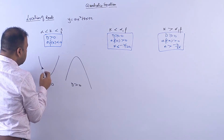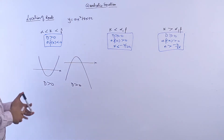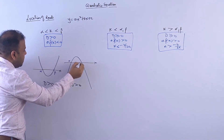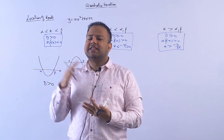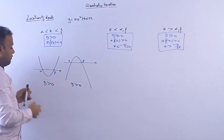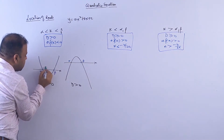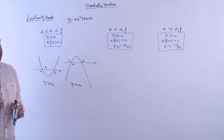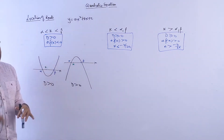Now if the roots are real, the parabola cuts the x-axis. Without any loss of generality, we can say alpha is less than beta — the smaller root is alpha and the larger root is beta. Now we are given that k lies between alpha and beta. Suppose k is somewhere here (not exactly at center — it doesn't matter, it can be anywhere). That is the whole purpose.